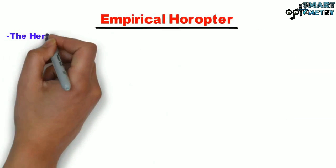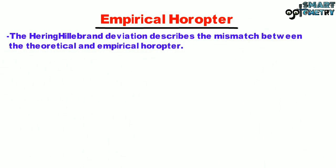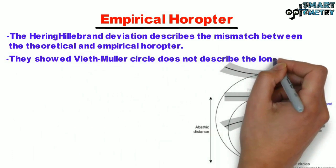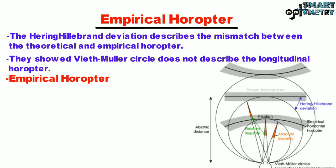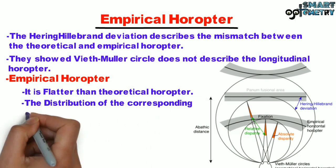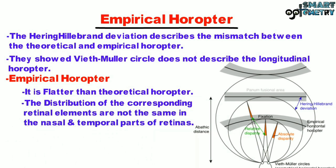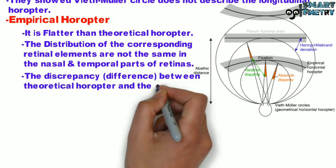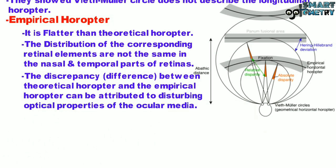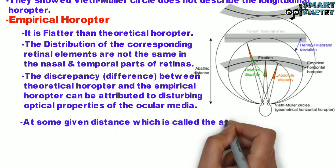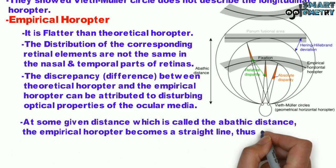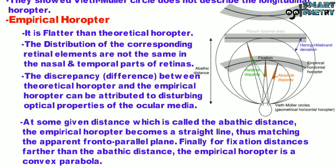The Empirical Horopter: the Herring-Hellibrand deviation describes the mismatch between the theoretical and empirical horopter, showing that Wittmuller's Circle does not describe the longitudinal horopter. The empirical horopter is flatter than the theoretical one because the distribution of corresponding retinal elements differs between the nasal and temporal parts of the retinas. At a given distance called the abathic distance, the empirical horopter becomes a straight line matching the apparent frontoparallel plane, and beyond that distance it becomes a convex parabola.